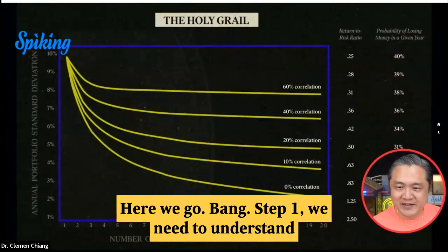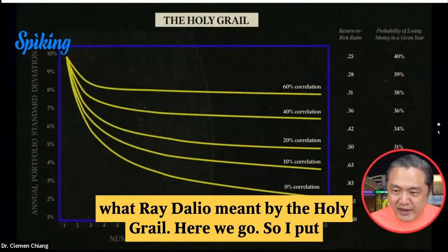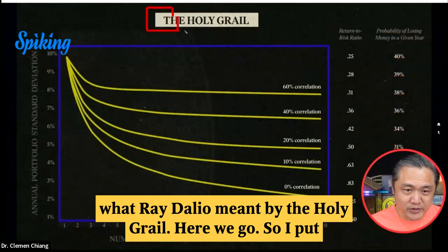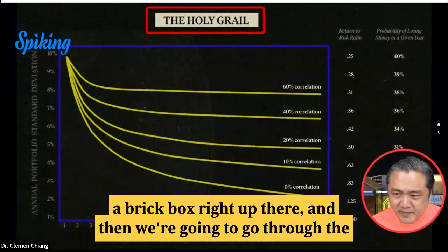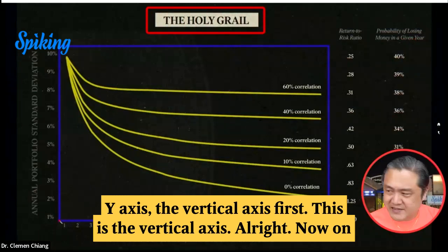Step one. We need to understand what Ray Dalio meant by the holy grail. I put a red box right up there, and then we're going to go through the y-axis, the vertical axis first.